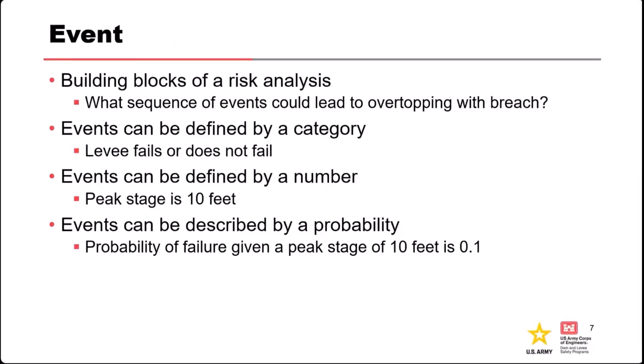There are different ways we can describe events. We can describe them categorically — so they fit into one category or another, for example, the levee fails or the levee doesn't fail. Or you can define events by a quantitative number, such as peak stage in the reservoir is 10 feet. We can also describe events by probability — taking either the categorical or numerical description of the event and putting a probability with it, giving you the magnitude of the thing and what's the likelihood of it happening, in this case 0.1 probability or 10%.